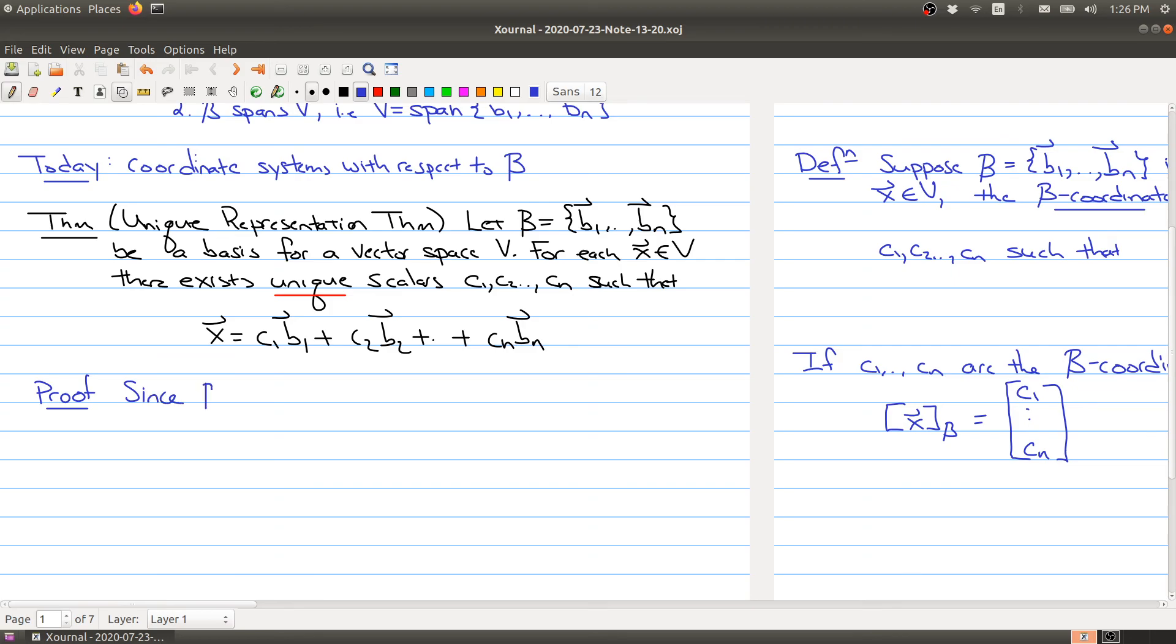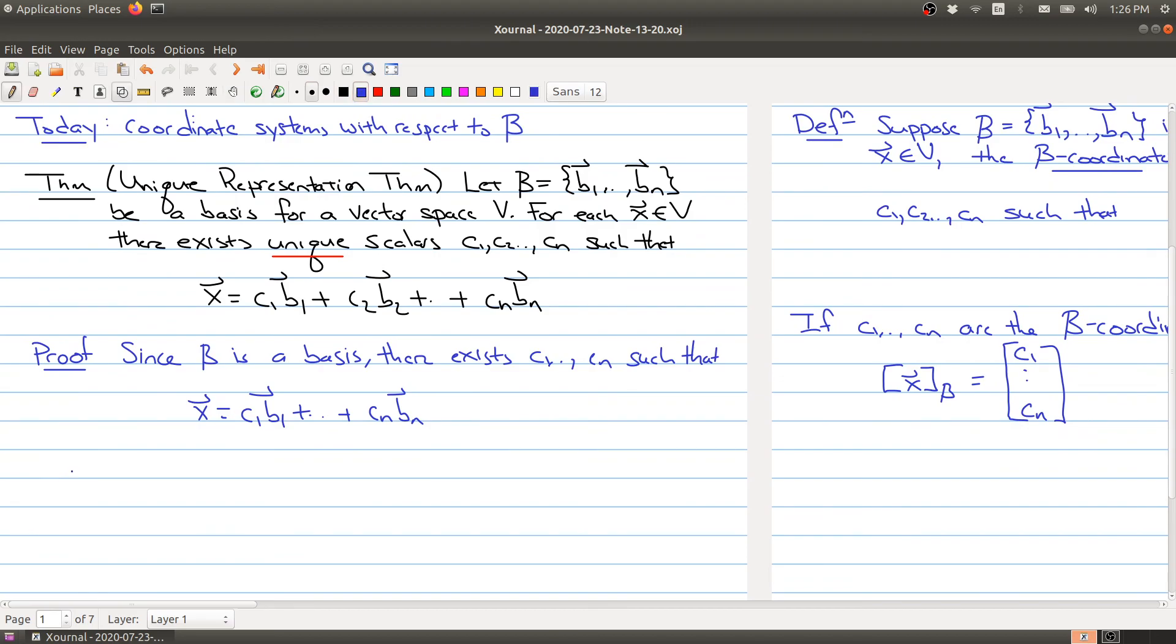All right, so since B is a basis, this is a fact I've already made clear. There exists c1 through cn such that x can be written as c1 times the first vector up to cn times the last vector. So we know that there are some ci's. Now what we want to do is show that these are the only ci's. And the way we do this is let's say that there's a different set of scalars that worked.